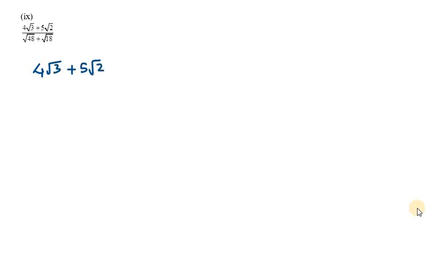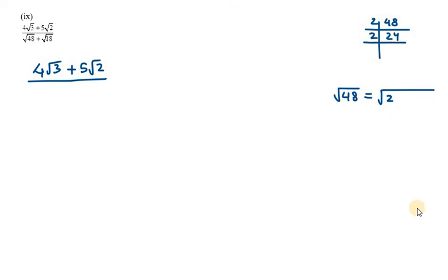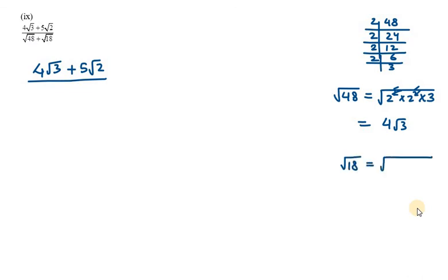The 9th part is 4 under root 3 plus 5 under root 2 over under root 48 plus under root 18. When we see large terms like under root 48 and under root 18, we should try to reduce them. Under root 48: prime factorizing 48 gives 2, 24, 2, 12, 2, 6, 2, 3 — so it is 2 squared times 2 squared times 3. Square and under root cancel, giving 4 under root 3. For under root 18, we write it as 2 into 3 squared. Square and under root cancel, giving 3 under root 2. So the denominator reduces to 4 under root 3 plus 3 under root 2.